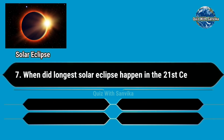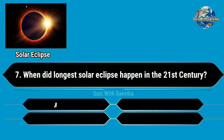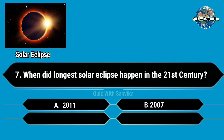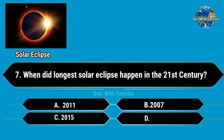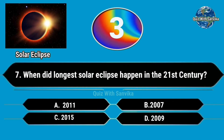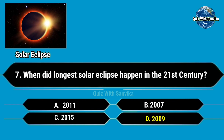When did the longest solar eclipse happen in the 21st century? Options are A. 2011, B. 2007, C. 2015, D. 2009. Answer is D. 2009.